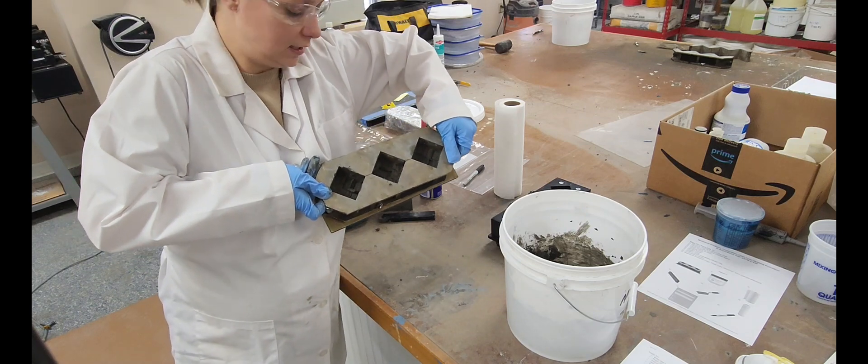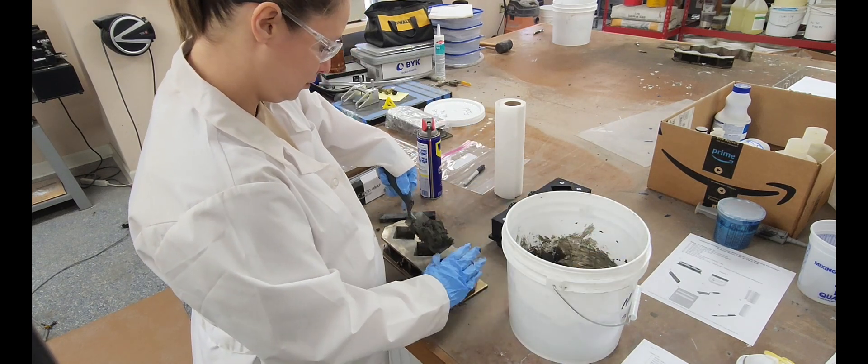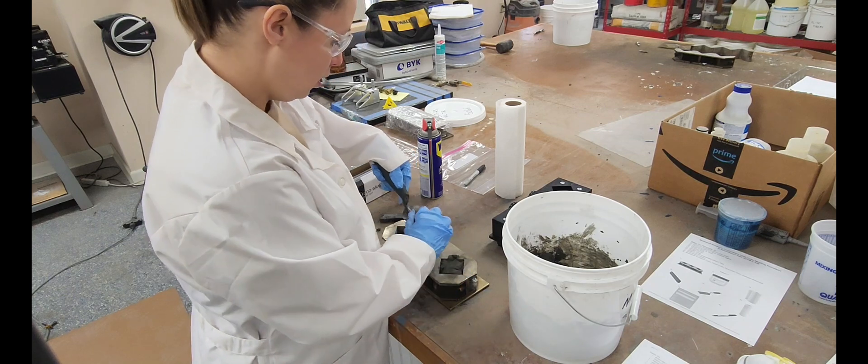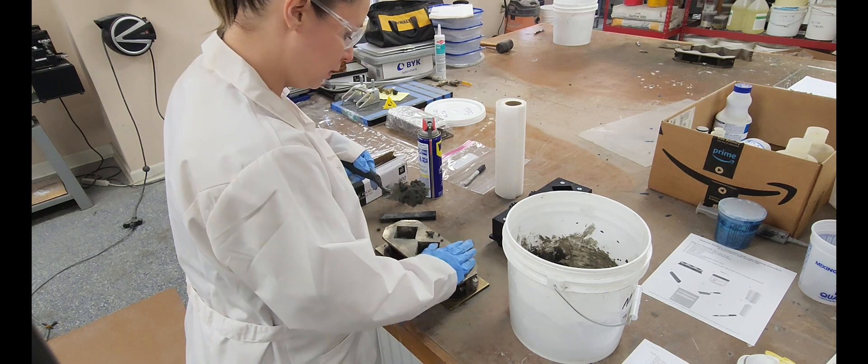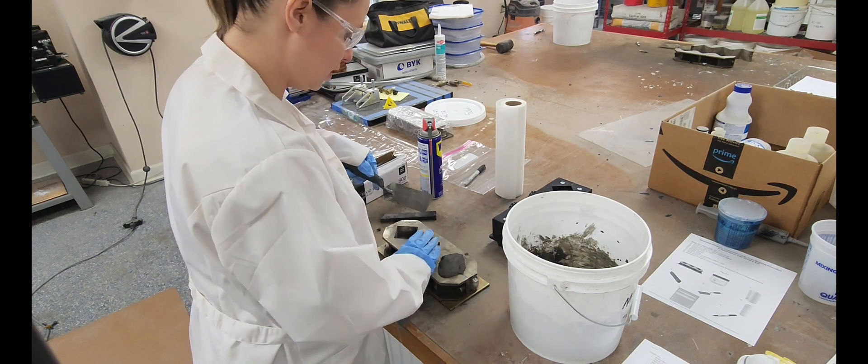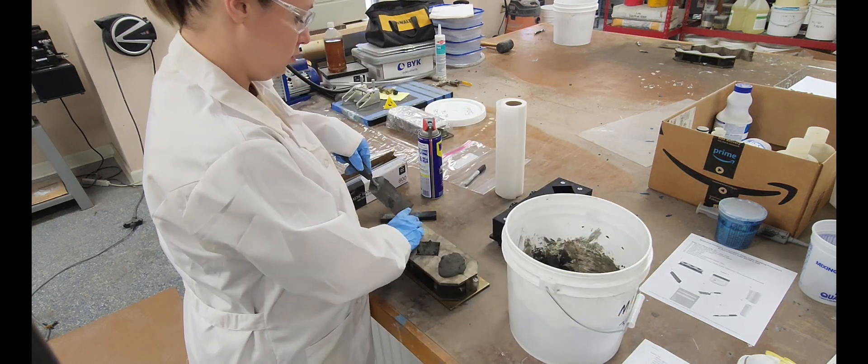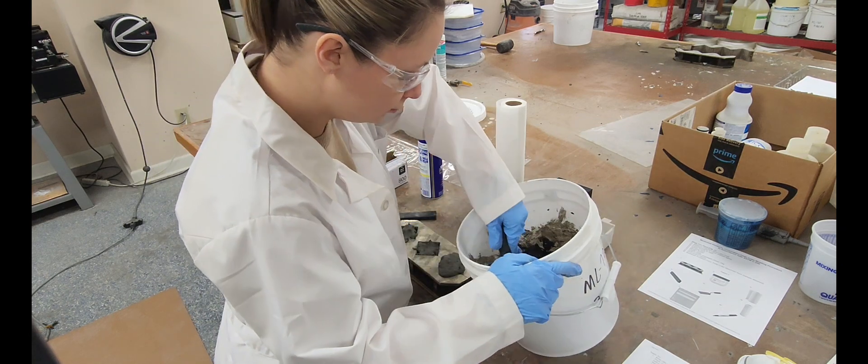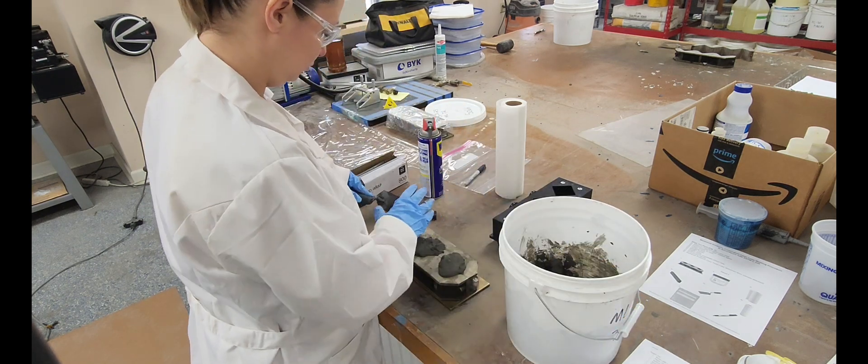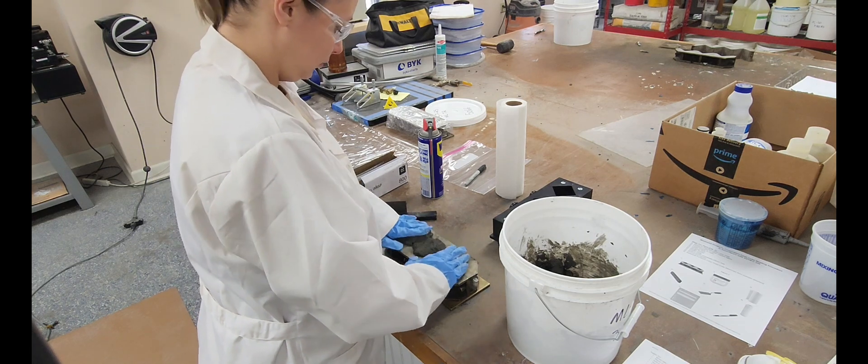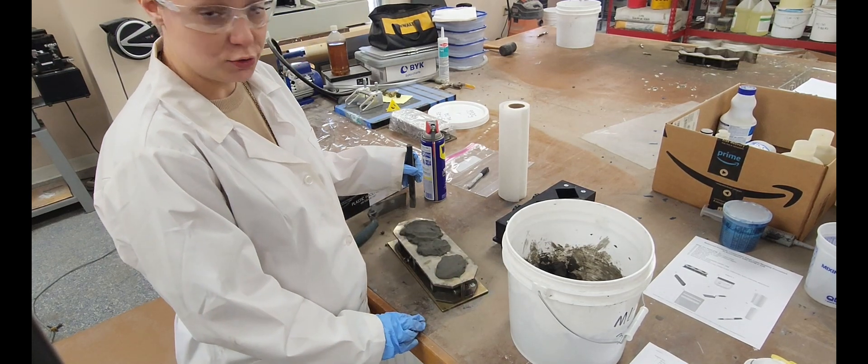Now you can see we've got those nice and compacted in there. Now we're going to continue on with filling the rest of the mold. We want to make these a little overfilled at the top because we're going to slam them down and tamp down that material into the mold.